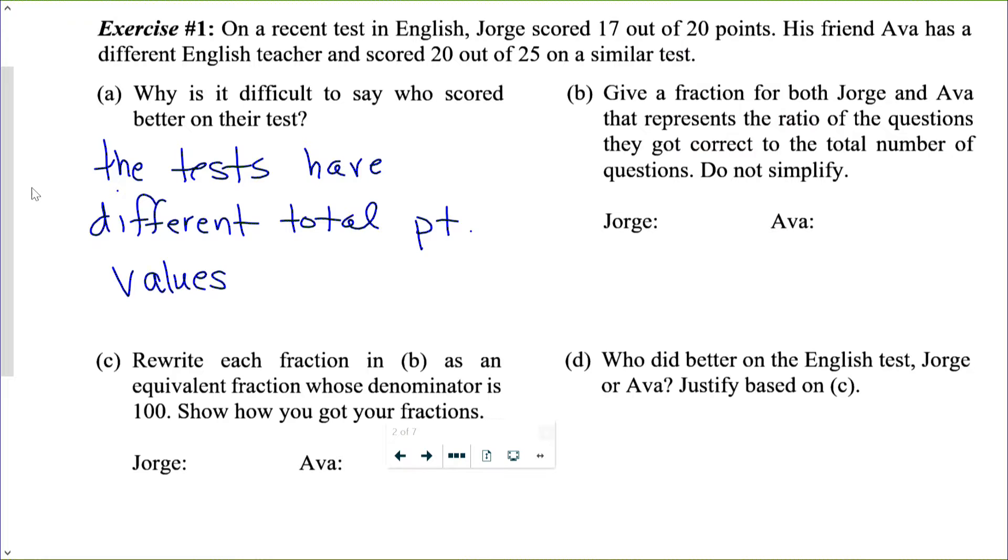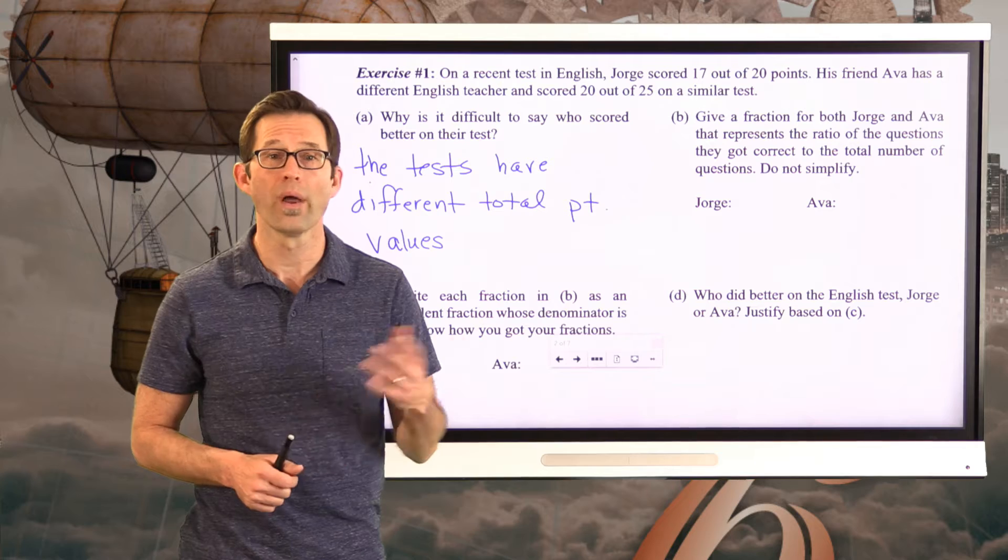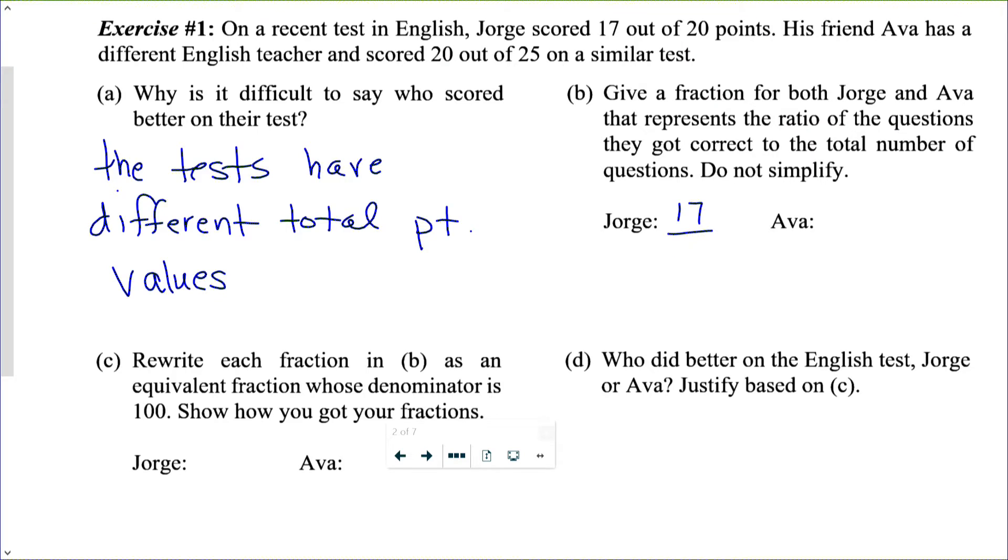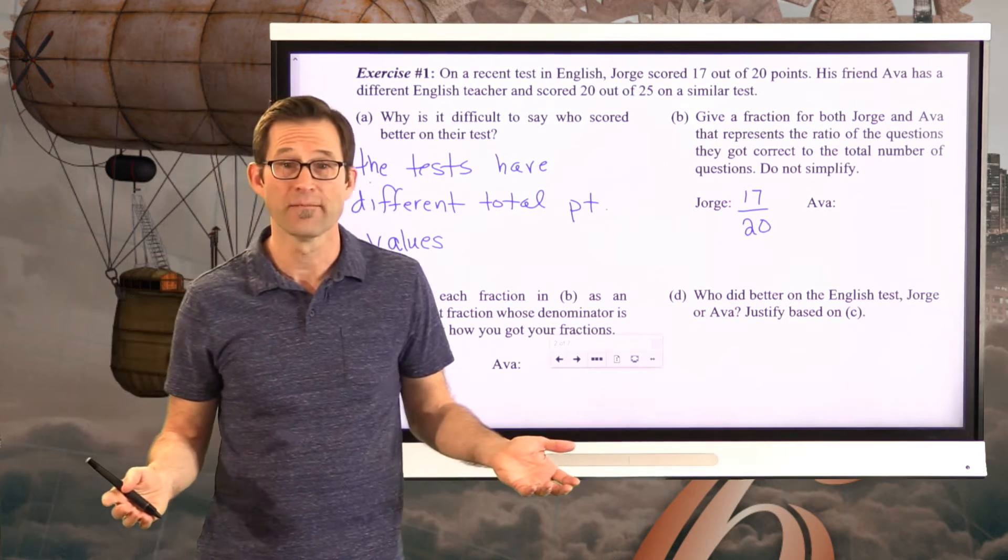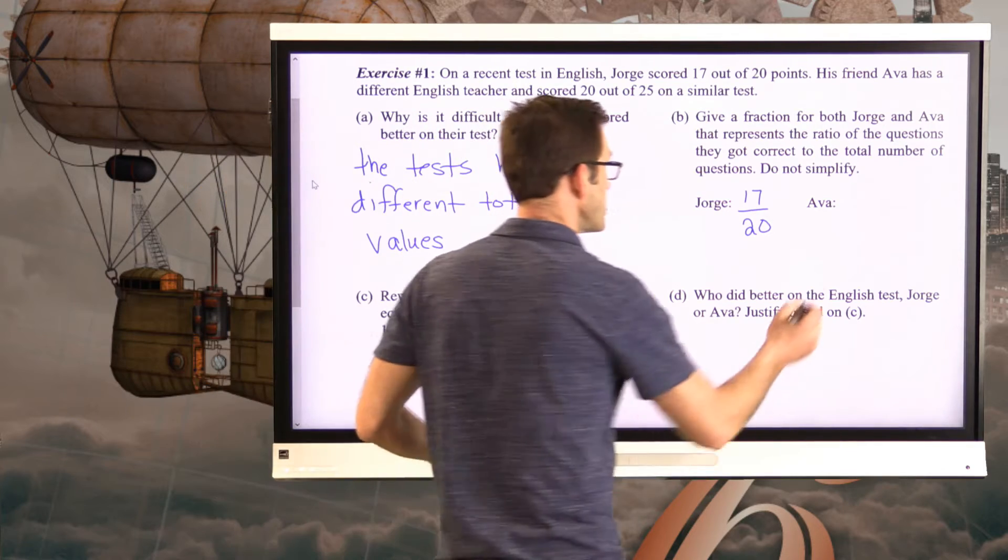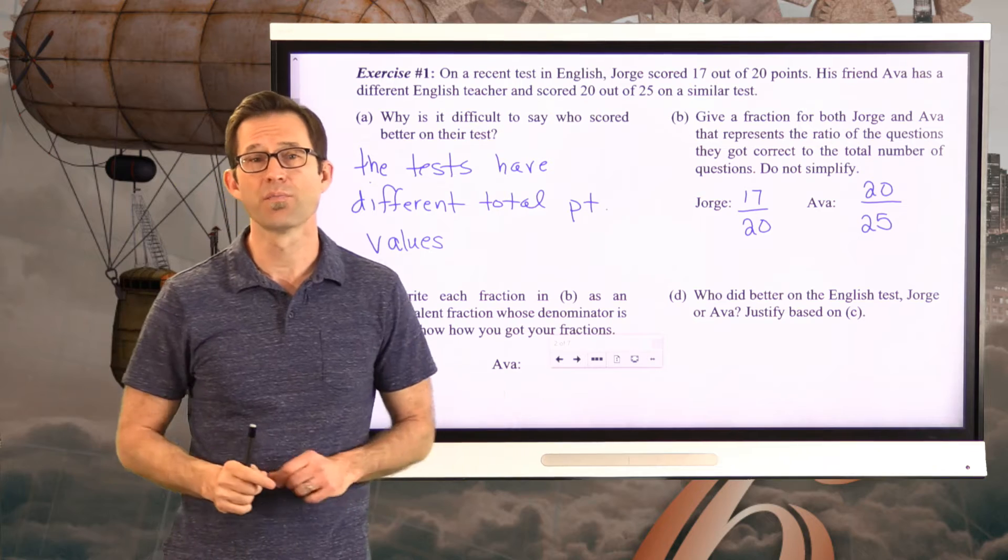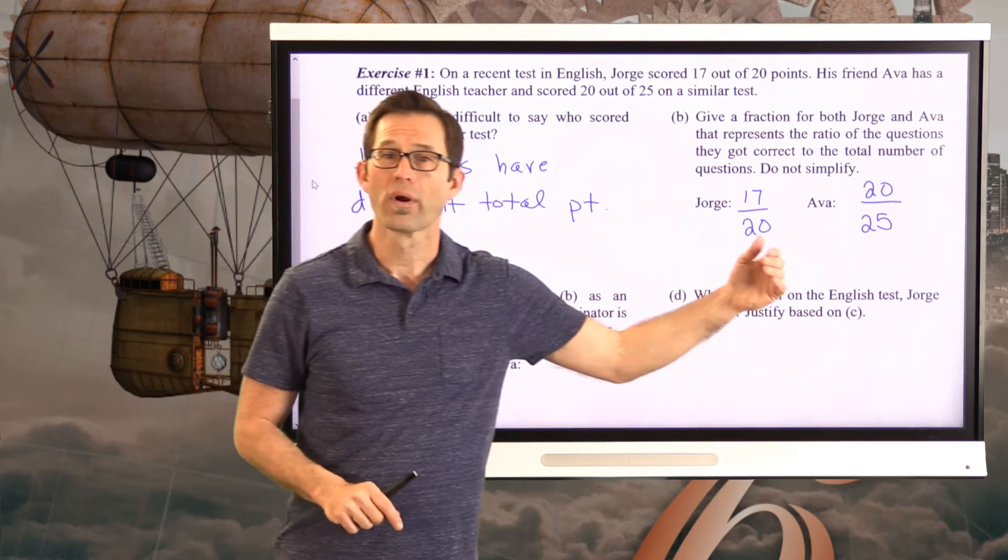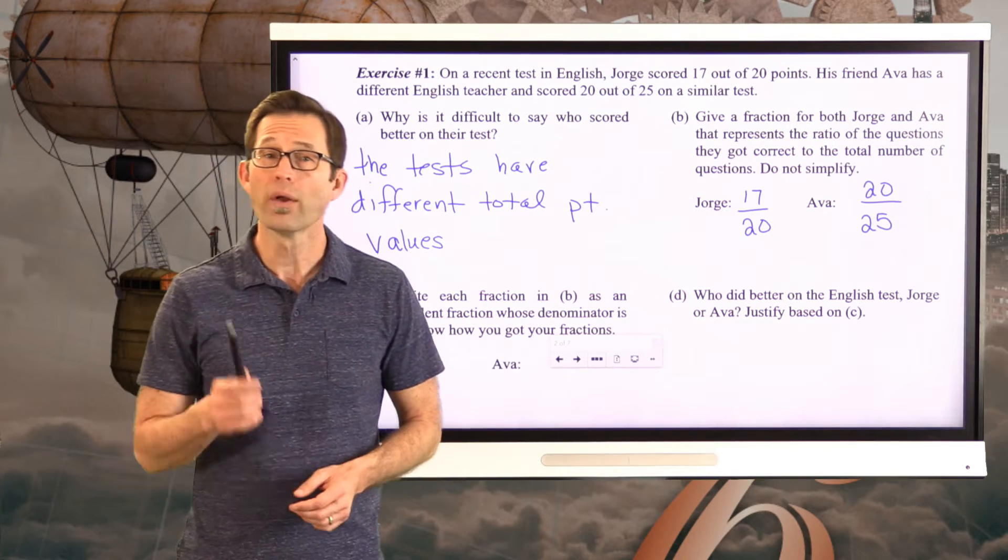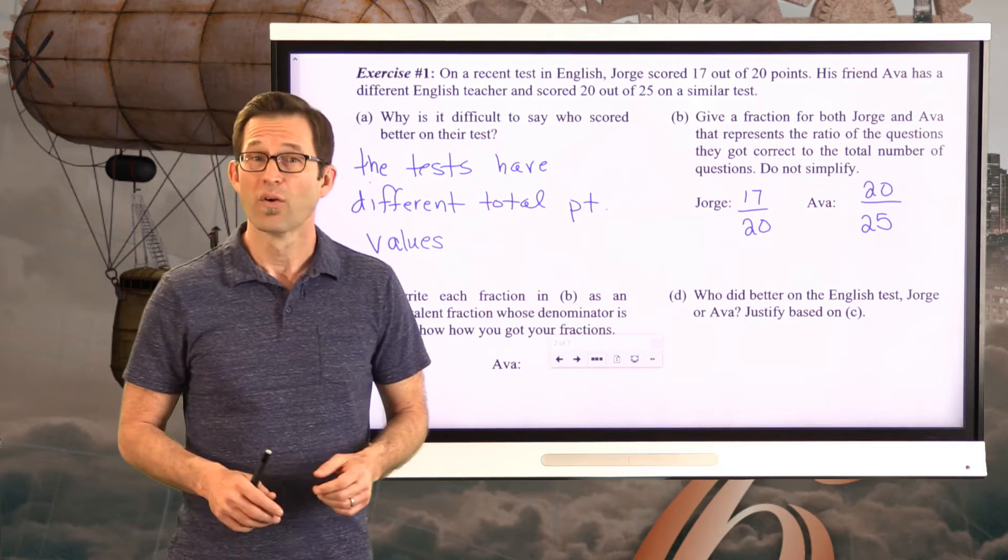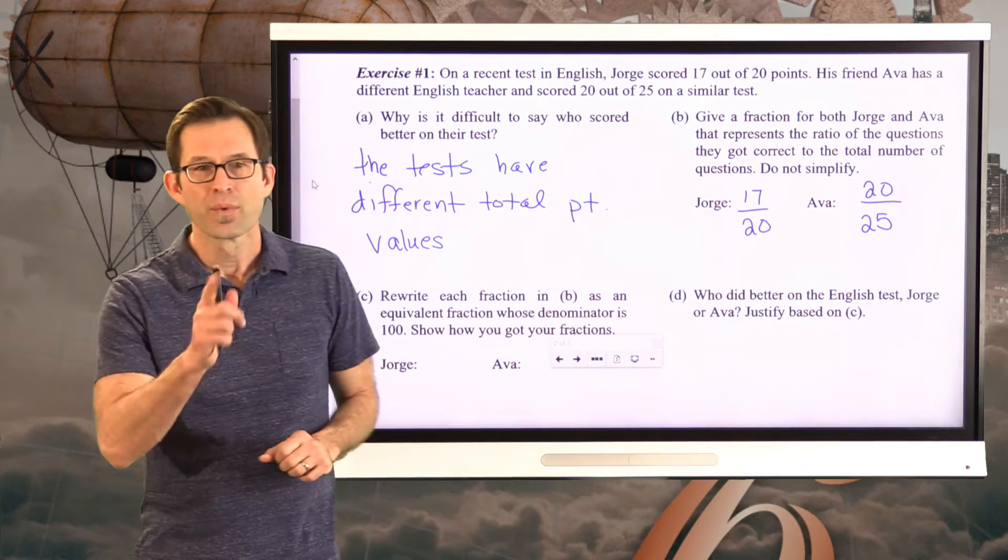But let's first take a look at letter B. Give a fraction for both Jorge and Ava that represent the ratio of the questions they got correct to the total number of questions. Do not simplify. Well, this is all just about what it means for one number to be a fraction of another number. So Jorge scored 17 out of 20 points. So the fraction of points that Jorge got correct were 17/20. And likewise, Ava got 20/25 correct.